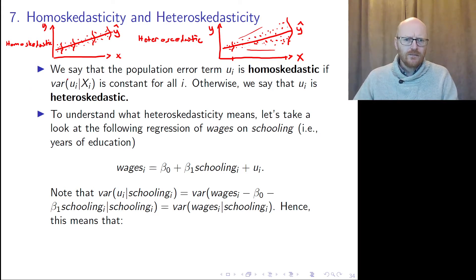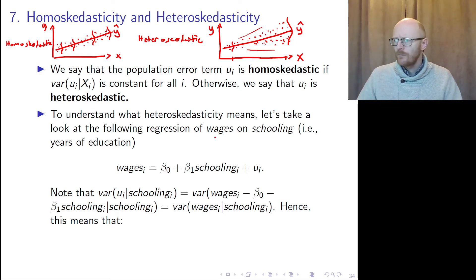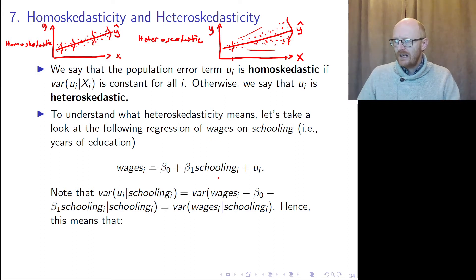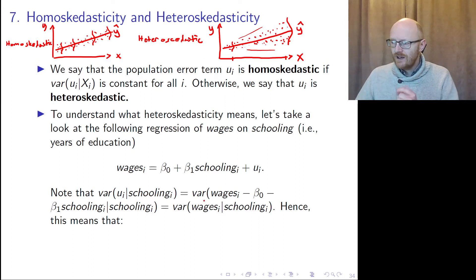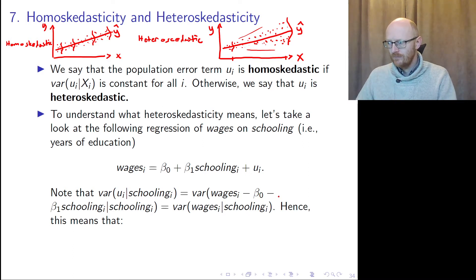What does this really mean? If we look at the example of wages on schooling — we are trying to predict the level of wages for people based on how many years of schooling they have gone through — what we can see is that the variance of the residuals given the level of schooling is equal to the variance of wages minus the expected wages given schooling.